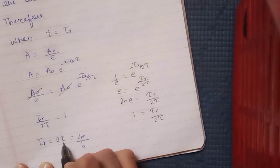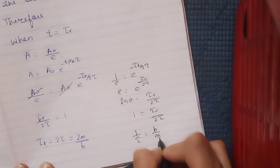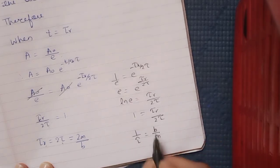The value of τ is m/b because 1/τ = b/m, so τ = m/b. Substituting here, we get τᵣ = 2m/b. So relaxation time is given by 2m/b.